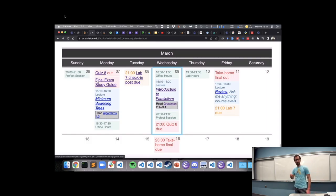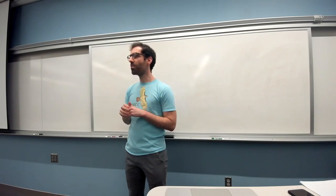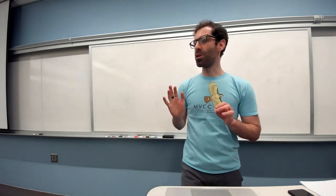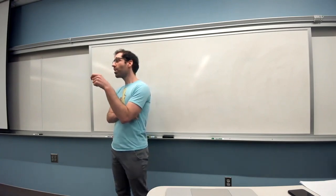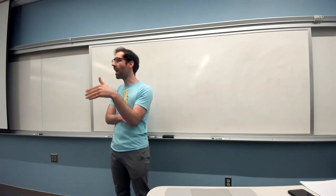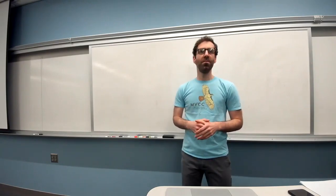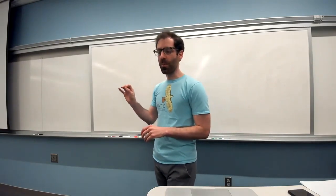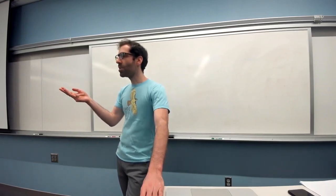Ben asks how many vertices and edges the large and medium graphs have. The large file is almost 8,000 lines — it's like an average of three classes per person, about four lines per person, so around 2,000 people, but it's unclear how many unique courses are in there. Probably thousands of vertices for the large, and maybe hundreds for the medium.